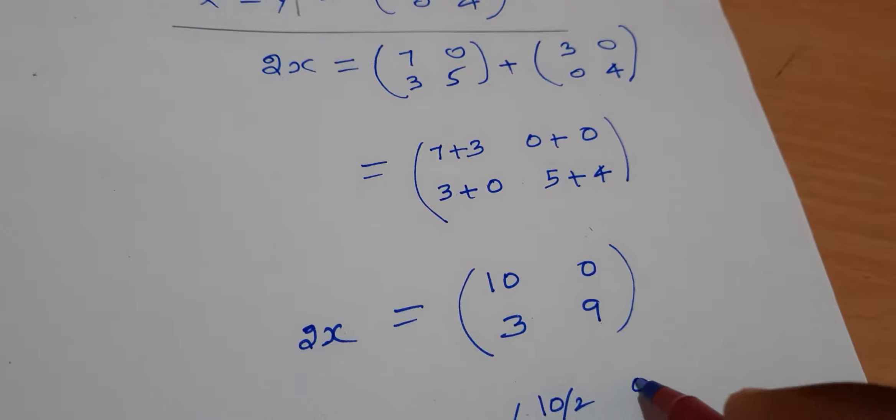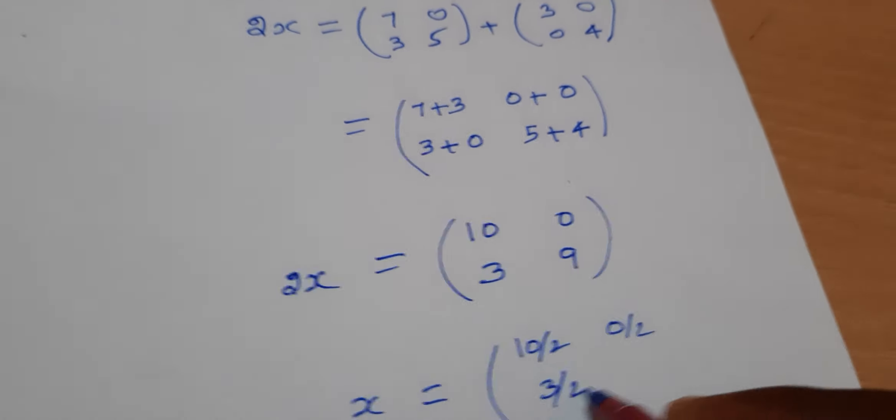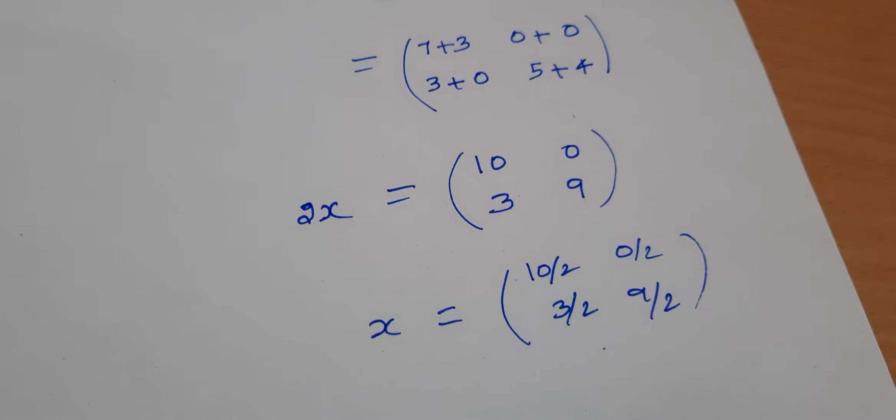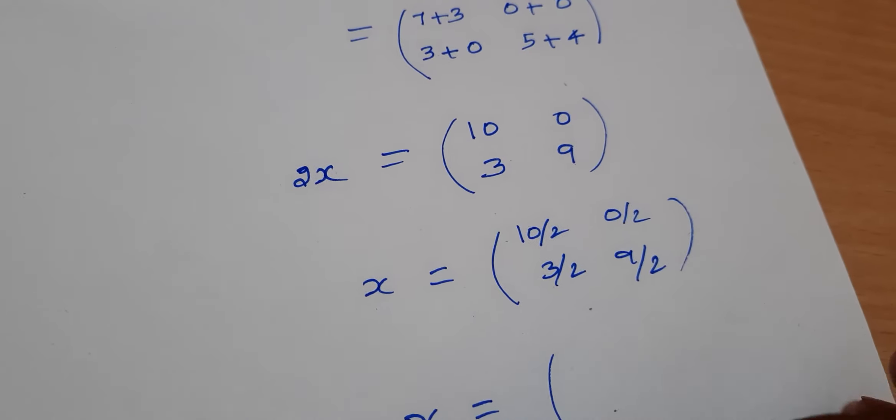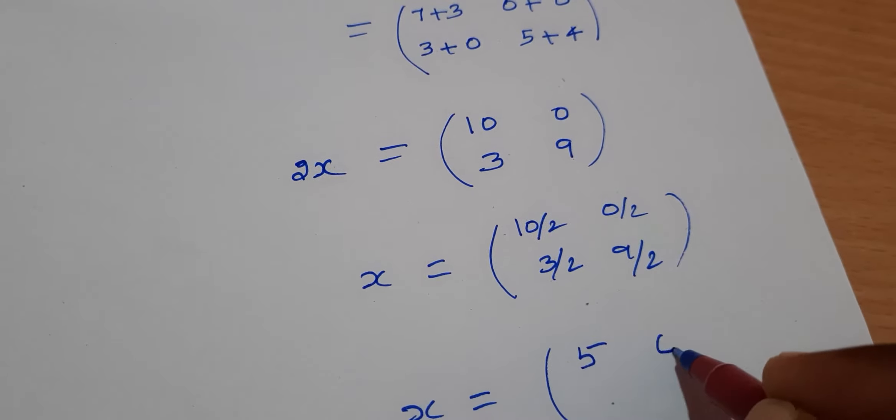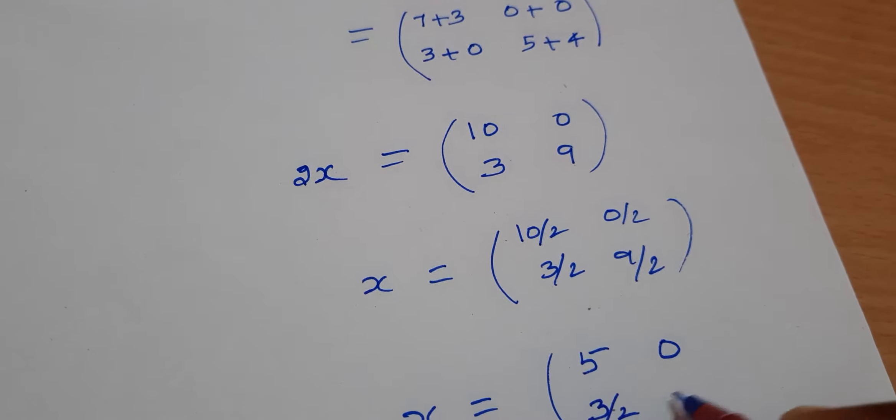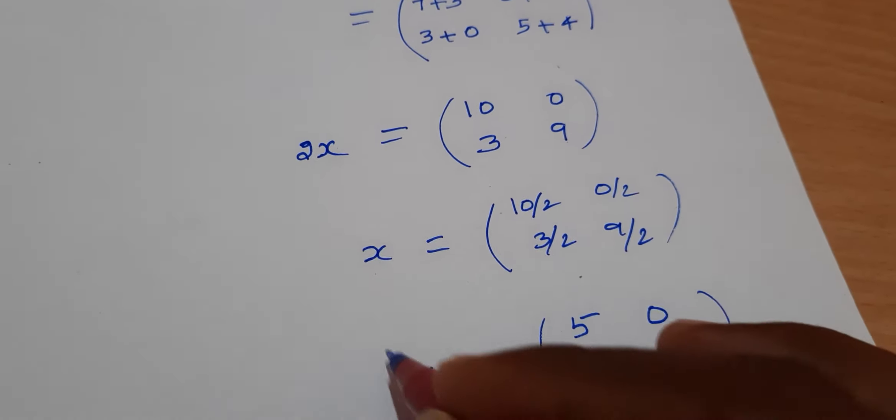Divide by 2. 10 by 2, 0 by 2, 3 by 2, 9 by 2. So x equals (5, 0; 3/2, 9/2).